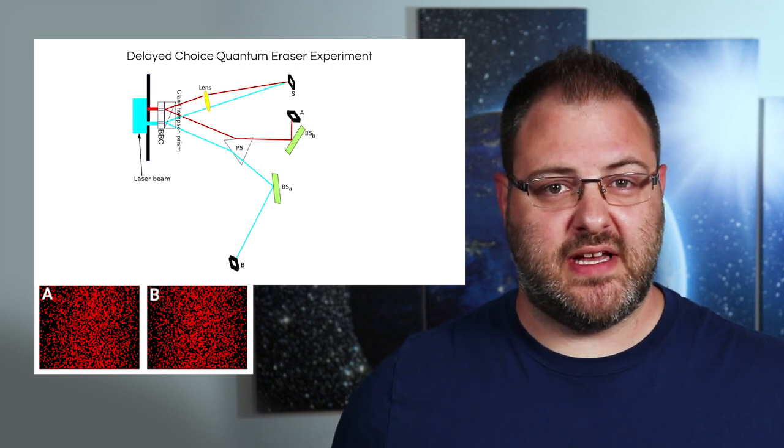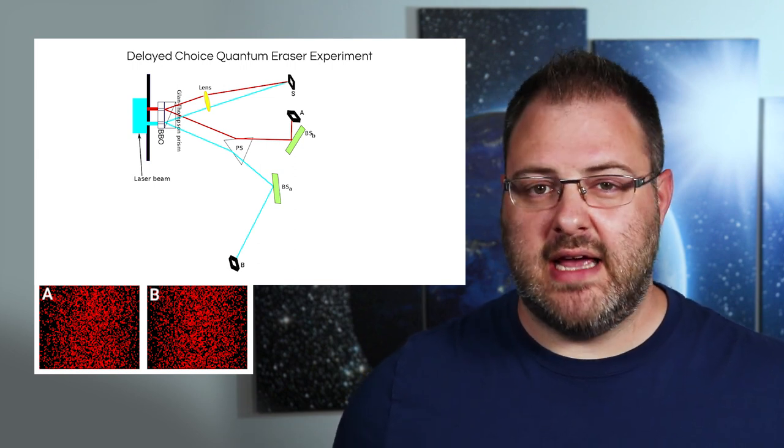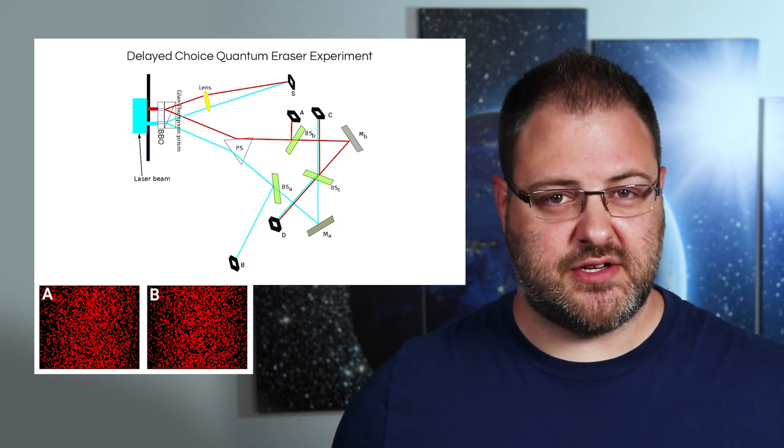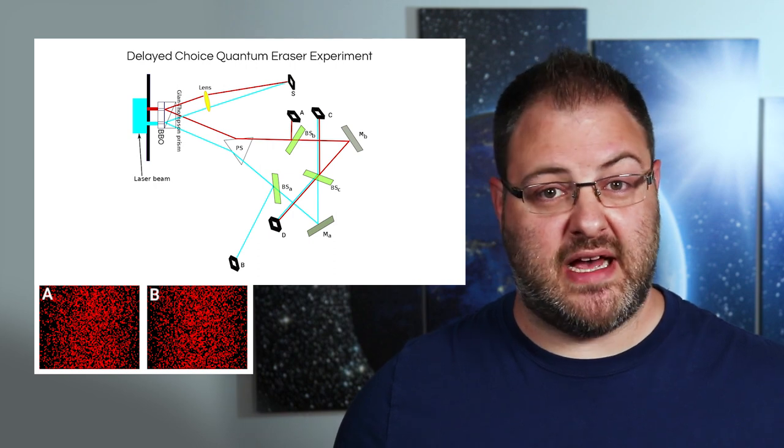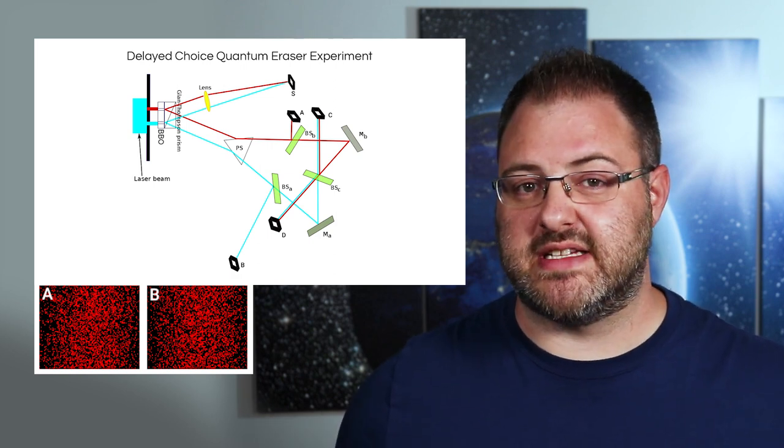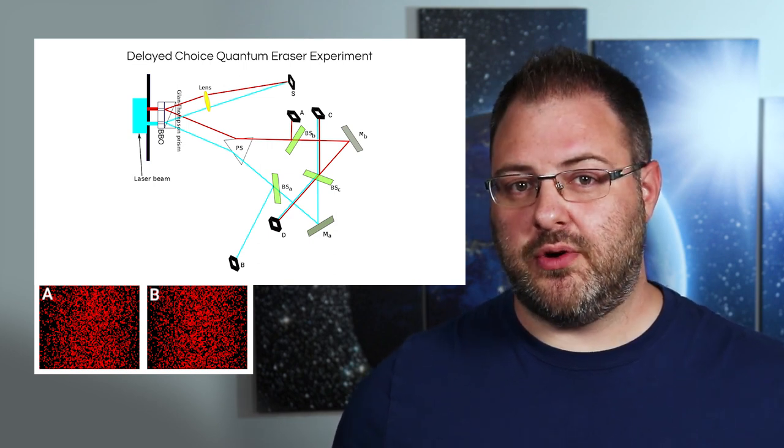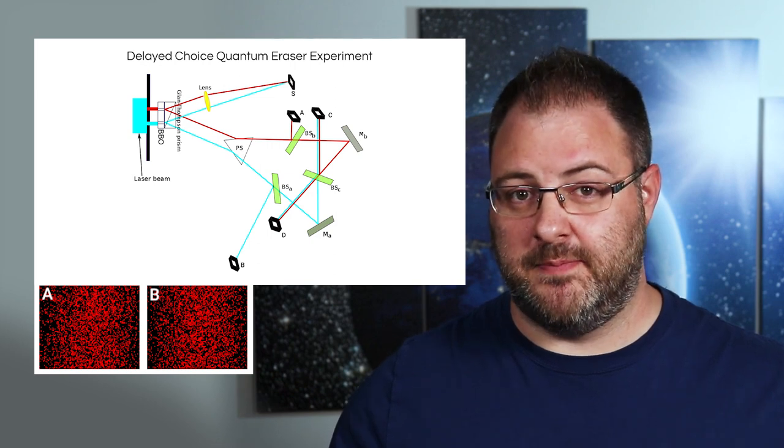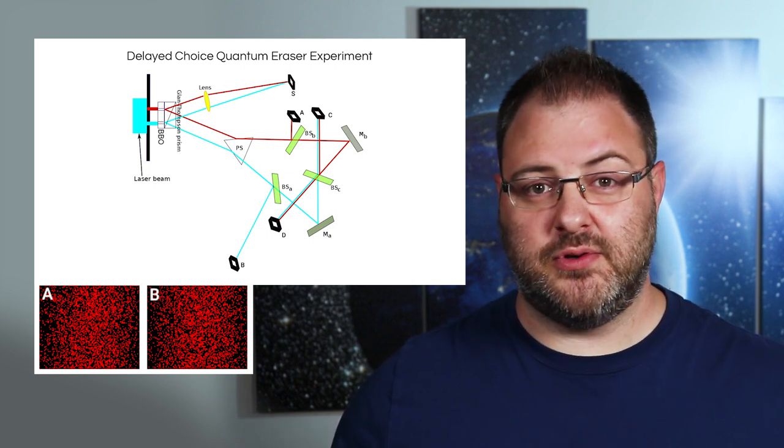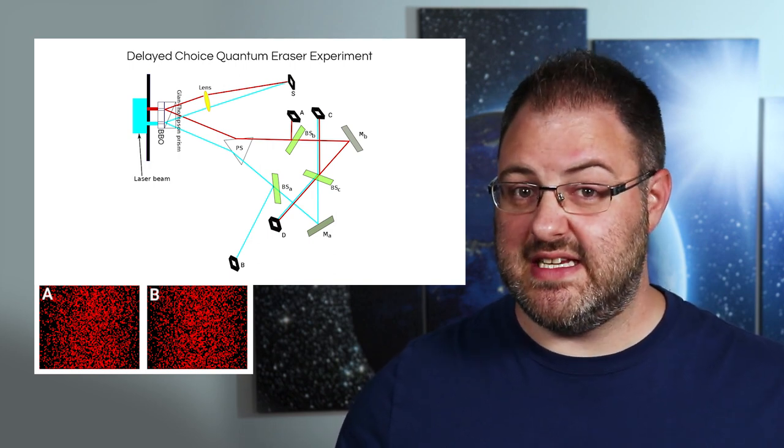So now instead of the mirrors that reflect the beams to detectors A and B, we'll use beam splitters to reflect half of the photons to detectors A and B and let the other half through to detectors C and D. These new detectors are the quantum eraser and their job is to destroy information about the path the photons took, essentially erasing the which way part of this experiment and as we also saw in the simpler example. So the only thing we'll add here for the photons that are let through are two mirrors that will reflect them back to another beamsplitter. This makes it so that when photons reach detectors C and D, we can no longer know which slit the photons originally came through because now they could have come from either slit and ended up in either the C or D detectors.